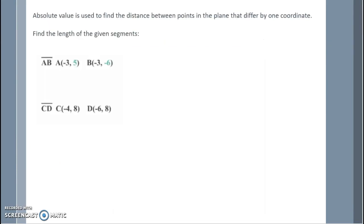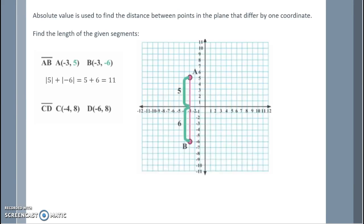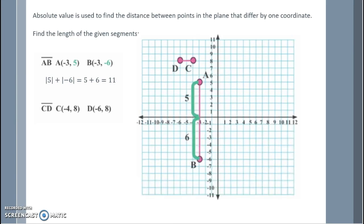Absolute value is used to find the distance between points in the plane that differ by one coordinate. Point A is at negative 5, negative 3 and point B is at negative 3, negative 6. Since the x-values are the same, we use vertical distance. The absolute value of 5 plus the absolute value of negative 6 is 5 plus 6, which equals 11 units. For points C and D, the y-values are the same. The absolute value of 6 minus the absolute value of negative 4 is 6 minus 4, which equals 2 units.